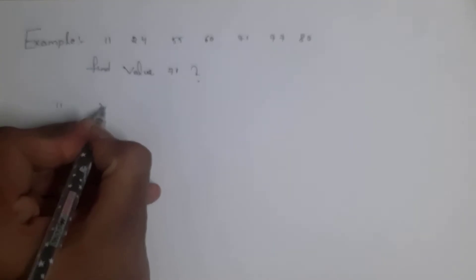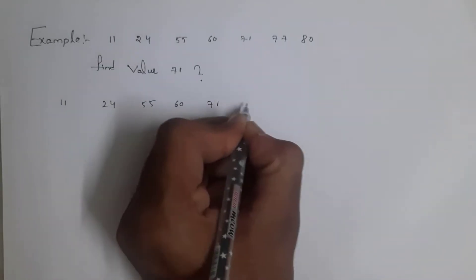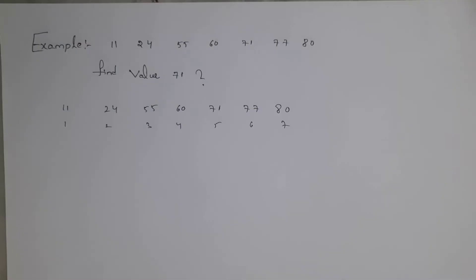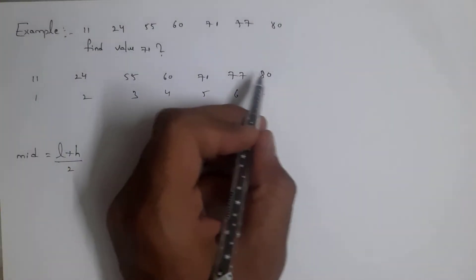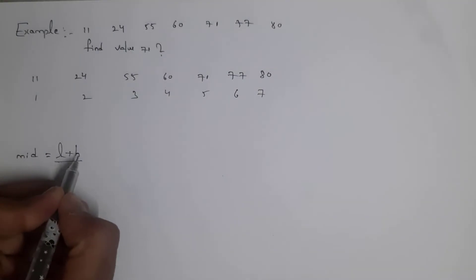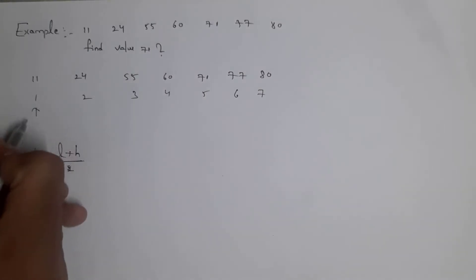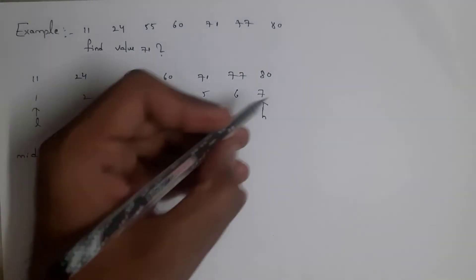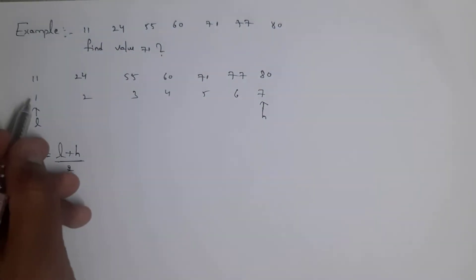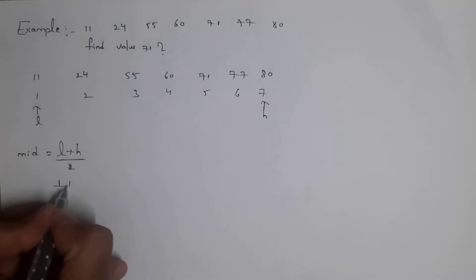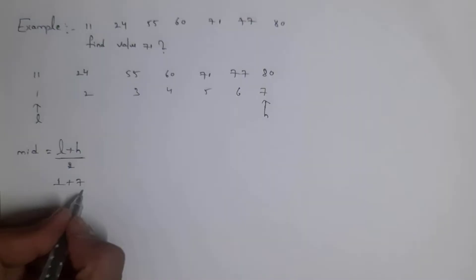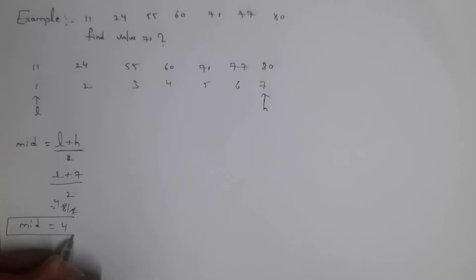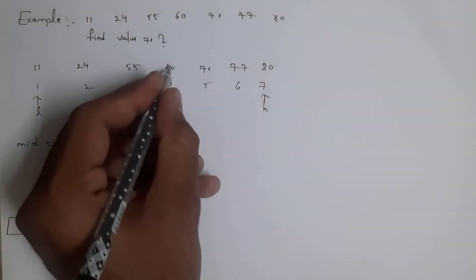First, write the elements: 11, 24, 55, 60, 71, 77, and 80 — total seven elements in the array. You need to find the middle element. The formula to find the middle element is: mid = (lower element + higher element) / 2. Lower element is the first element and higher element is the last element in the array. So mid = (1 + 7) / 2 = 8 / 2 = 4. The mid value is 4, so the middle element is 60.